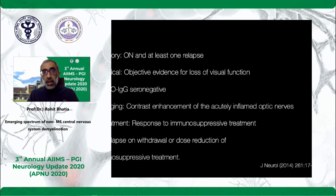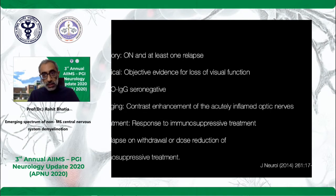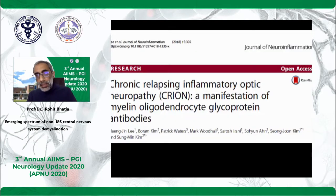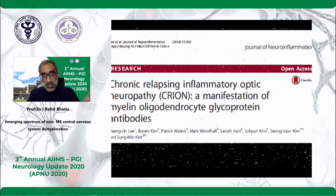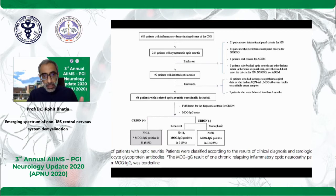The CRION criteria state: optic neuritis with at least one relapse, objective evidence of visual dysfunction, NMO-negative, contrast enhancement of the optic nerve, and response to immunosuppressive treatment. So if you have this and nothing else, this is CRION. But unfortunately or fortunately, we moved further — CRION patients who are now checked are actually MOG-positive. MOG may be uplifted because the myelin is being damaged, but yes, we know there is something which is now a biomarker. In CRION, patients with recurrent disease had strongly positive MOG, whereas those with monophasic disease had limited positivity, and recurrent non-CRION-like patterns had no MOG positivity.